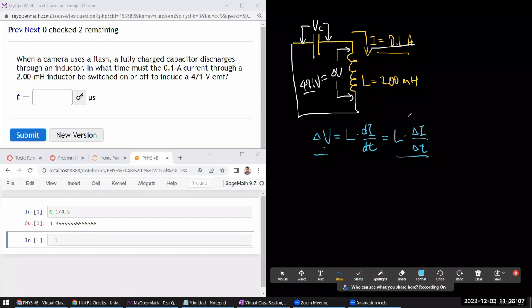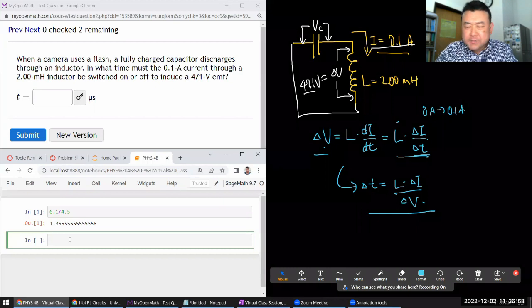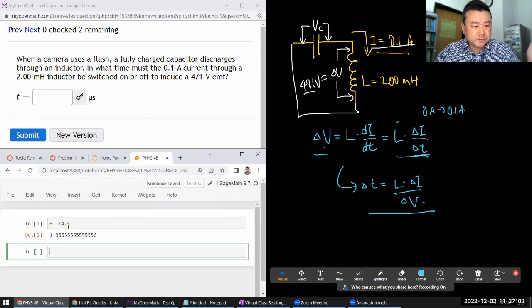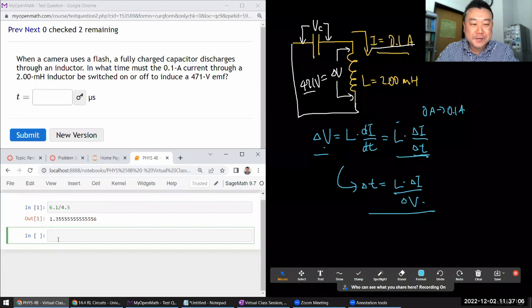So here I'm thinking of a constant rate of change. That would be inductance times the total amount of current change over the total amount of time. So I have voltage, I have inductance, I have the total amount of current change from zero ampere to 0.1 ampere, and the time is what I need to solve for. So doing that algebra, I will plug in the numbers. Let me just do everything in basic SI unit. So 2.0 millihenry times 10 to the power of minus 3 henry, times change of current 0.1 ampere, divided by 471 volt EMF.